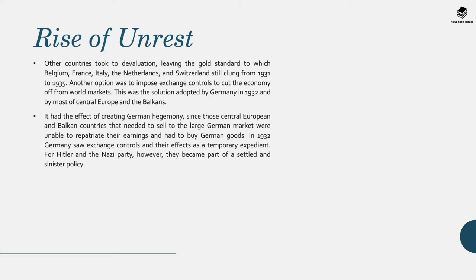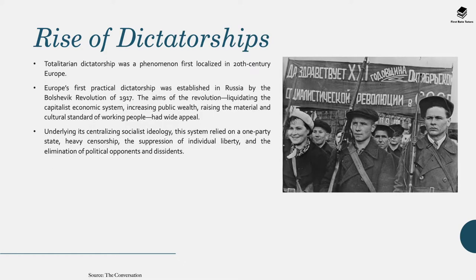Exchange controls had the effect of creating a German hegemony, since those Central European and Balkan countries that needed to sell to the large German market were unable to repatriate their earnings and had to buy German goods. In 1932, Germany saw these exchange controls as a temporary expedient, but for Hitler and the Nazi party they became part of a settled and sinister policy.